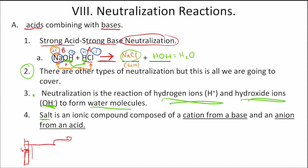And then a salt, it's an ionic compound composed of a cation from the base. That was this right here, the Na. And then an anion from the acid and the anion is right here and they went together to form your salt, which in this case was Na plus Cl minus, which gave us NaCl.